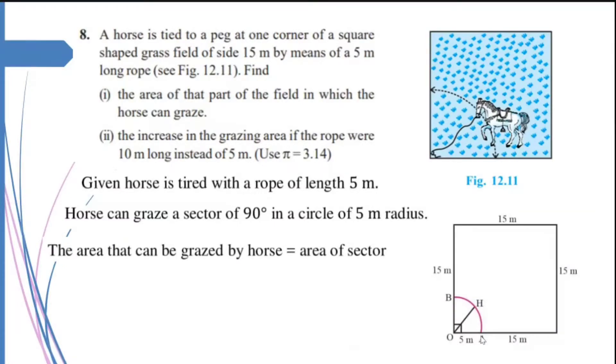So the area that can be grazed by the horse is equal to the sector. And I know that the area of the sector is equal to θ/360 × πr². If I put θ = 90 and r = 5, I get the area equal to 1/4 × π, which is 3.14 × 5 × 5, which gives me 25/4 × 3.14, which gives me finally 19.625 meters squared. So this is the area over which the horse can graze if the length of the rope is only 5 meters.